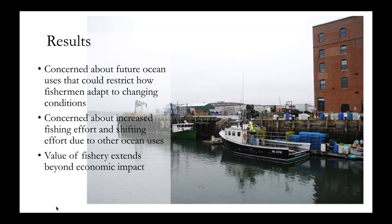We compiled all the interviews into one document and looked for similarities in responses. The first big concern is about future ocean uses that could restrict how fishermen adapt to changing conditions. Things are changing rapidly on the water — species are shifting, and many species traditionally found in more southern waters are now being caught off the coast of Maine. Fishermen have to adapt quickly to maintain their business.